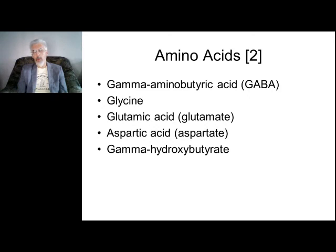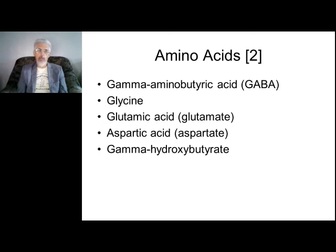Next type: amino acid neurotransmitters — GABA, glutamate, aspartate, and gamma-hydroxybutyrate. Remember these types — you may encounter questions about them in your licensing exams when you return to your countries.